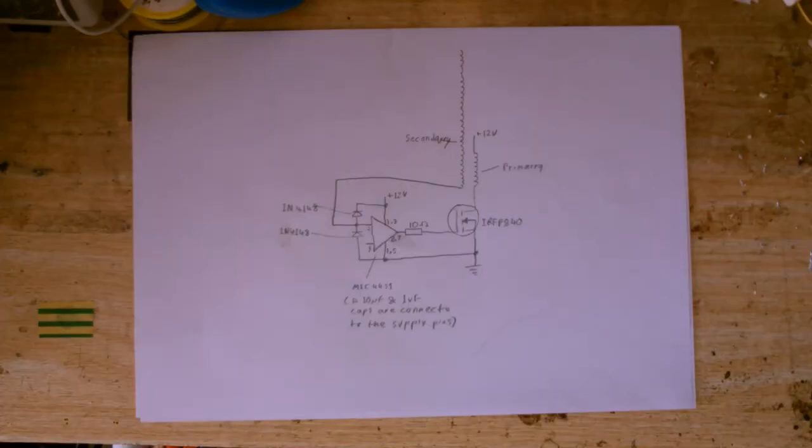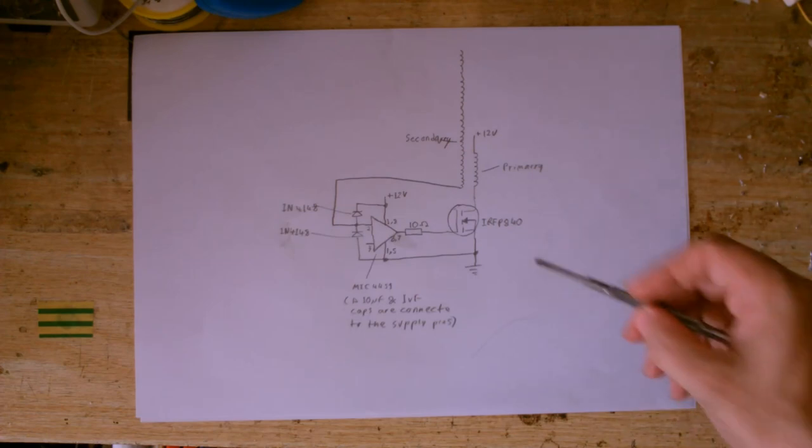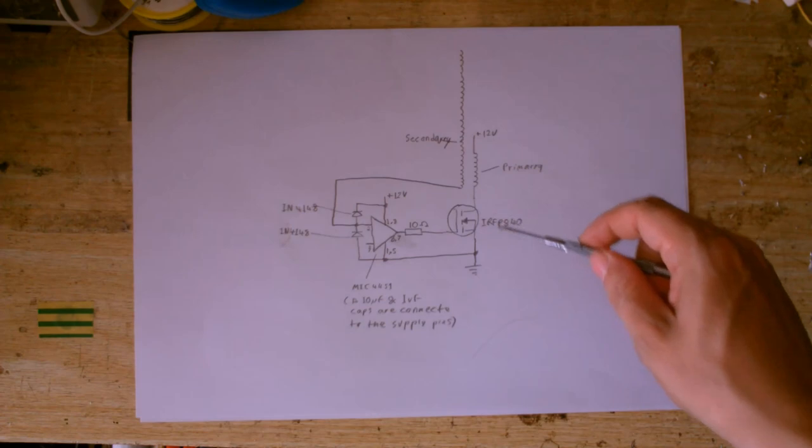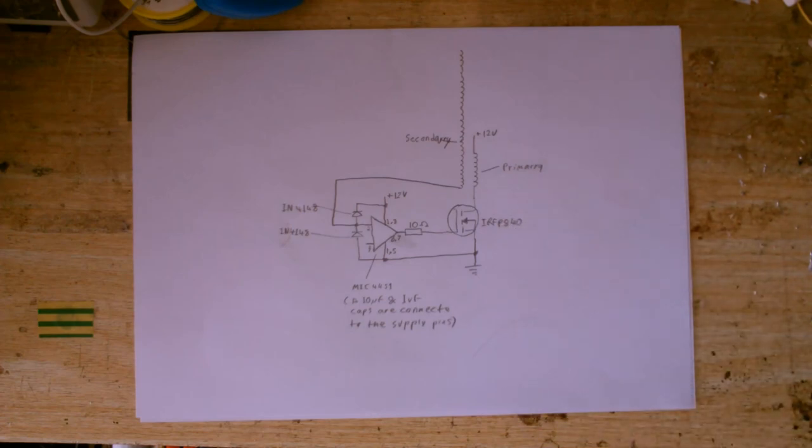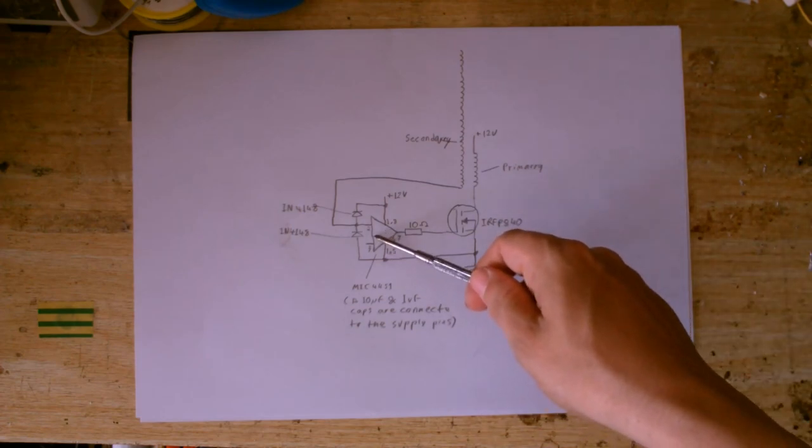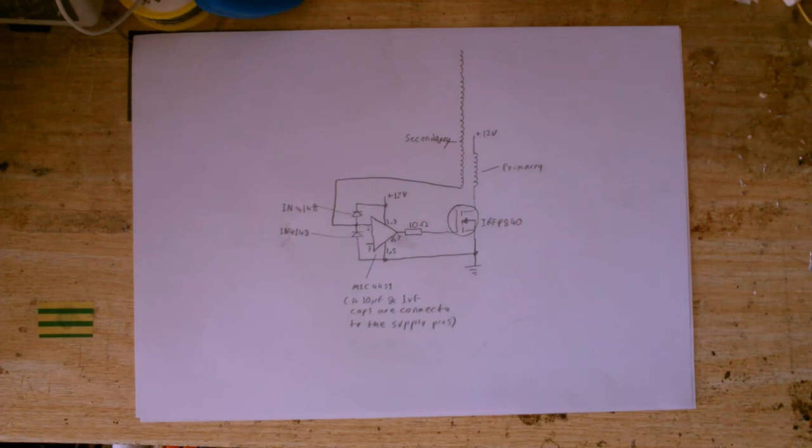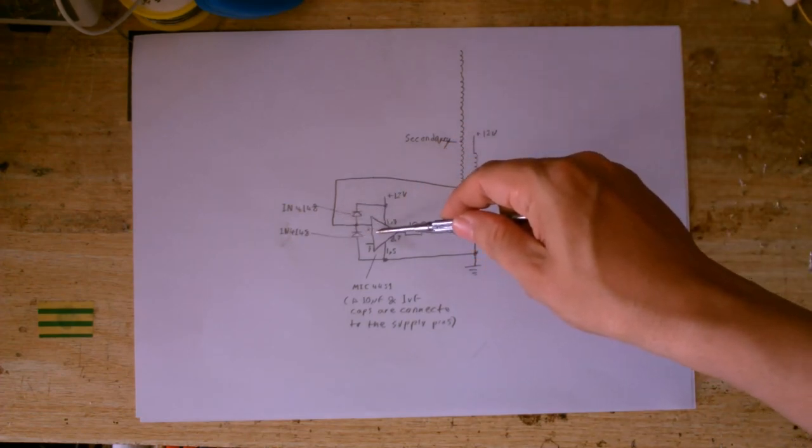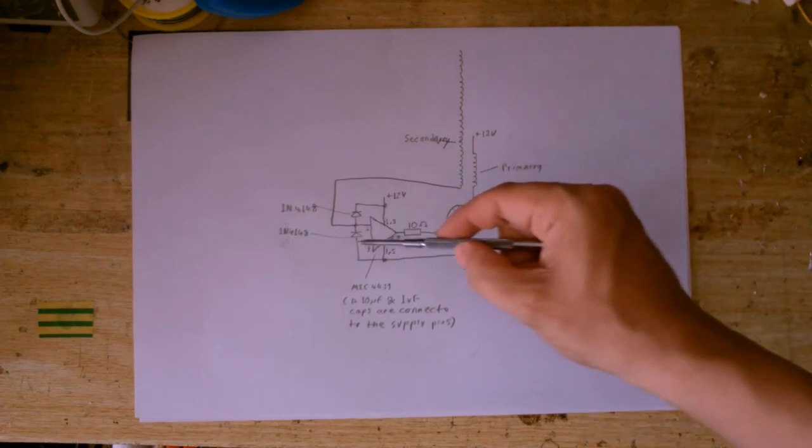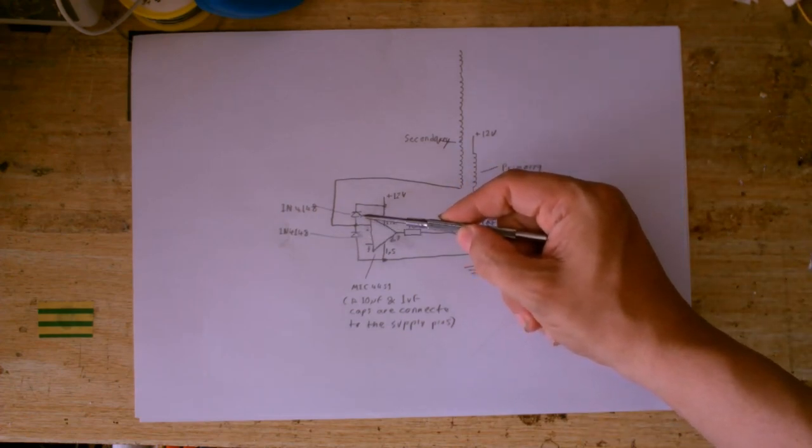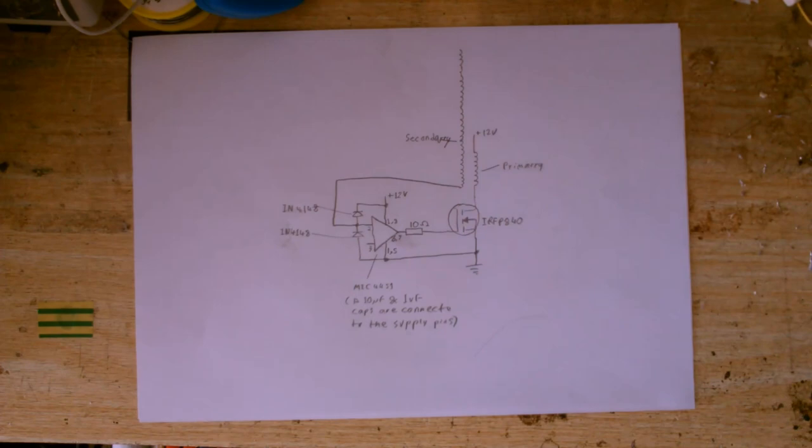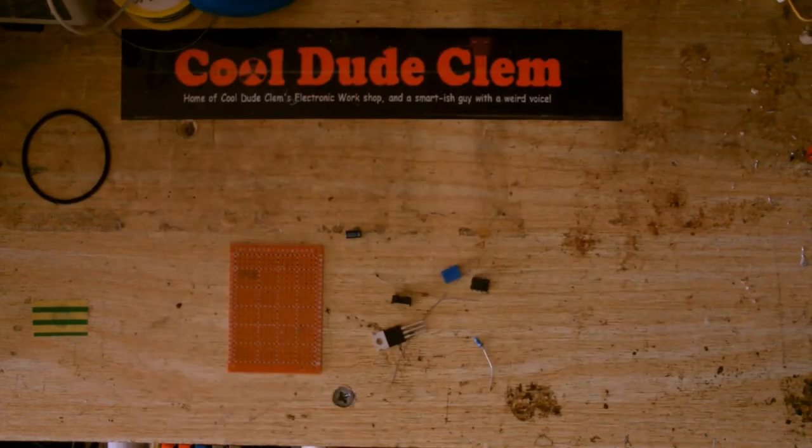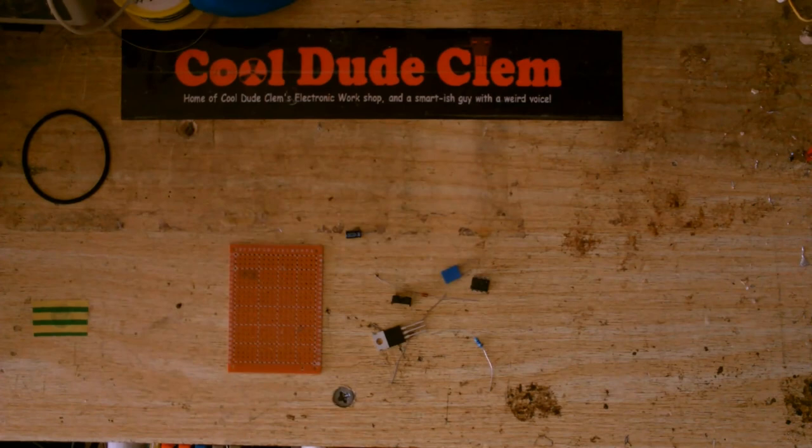So this is the circuit that I've come up with. It's basically a Slayer exciter. Instead of a bipolar transistor I'm using a MOSFET and to feed the MOSFET I'm using a gate driver IC and it gets its feedback from the secondary here going straight into the gate driver IC. These two diodes protect it from over voltage from the secondary. That's basically the circuit. Got all the parts right here. Let's put this together.